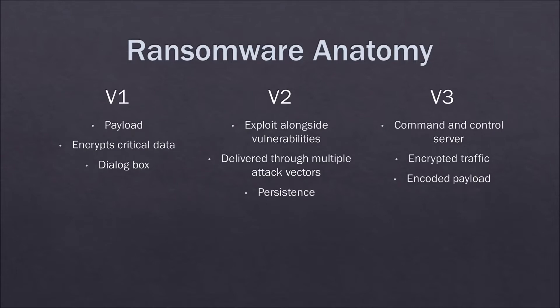On version two, we're going to use vulnerabilities, which can be extensive — for example, the EternalBlue vulnerability seen in earlier videos, or the VLC vulnerability, where we inject the ransomware payload into the environment. There are many attack vectors we can use to bait and deliver the payload into machines. And finally, persistence — what do we do if a vulnerability doesn't get fully exploited or gets closed halfway?